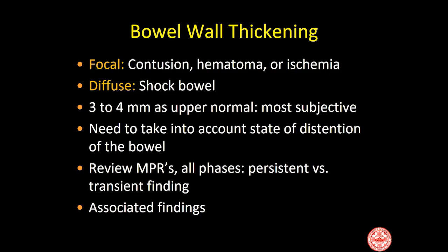The most common and important sign is bowel wall thickening. It has to be focal to be secondary to bowel trauma, and it can represent contusion, hematoma, ischemia, or a combination — any of which indicates the patient should have a laparotomy and usually a segmental resection. Diffuse wall thickening is not an indication of bowel injury; it is secondary to hyperperfusion and so-called shock bowel. The determination of thickening is mostly subjective, measurements are not that useful, and we must account for the state of bowel distension. Delayed images are important: any area of thickened bowel persisting into the delayed images very likely indicates a significant injury. Always review multiplanar formats and look for associated findings.